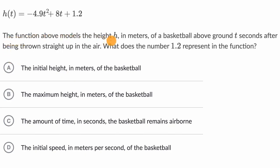We're told the function above models the height h in meters of a basketball above ground t seconds after being thrown straight up in the air. What does the number 1.2 represent in the function? Pause this video and think about it on your own before we work through it together.